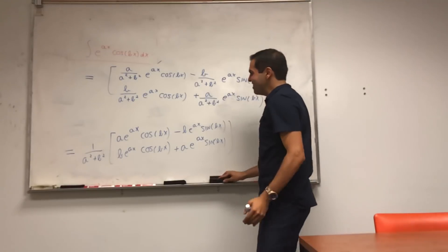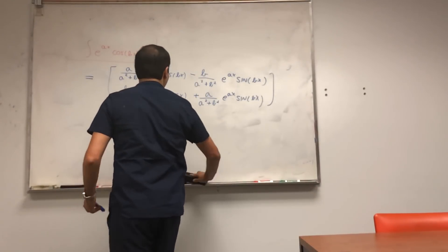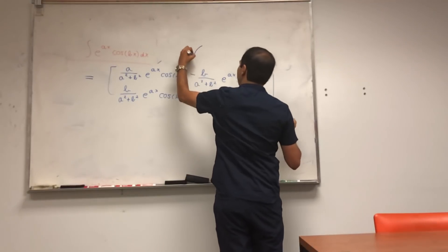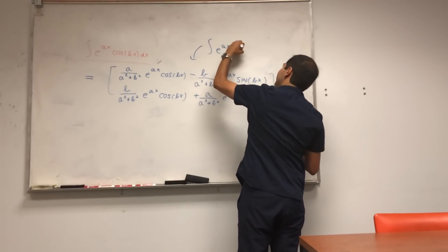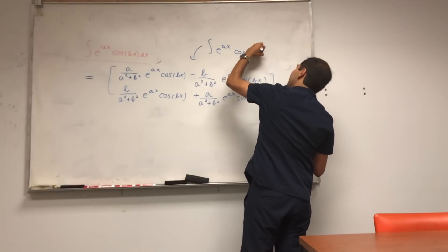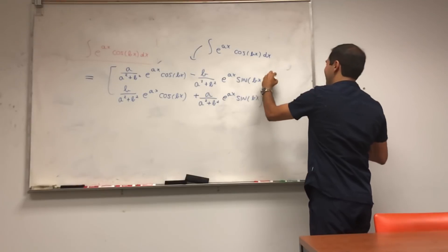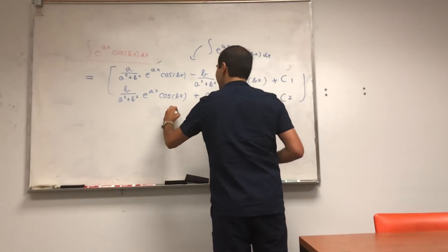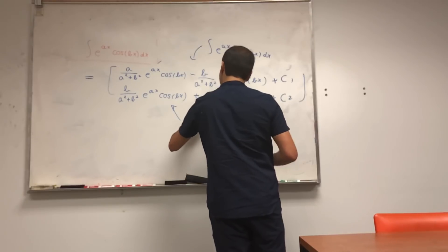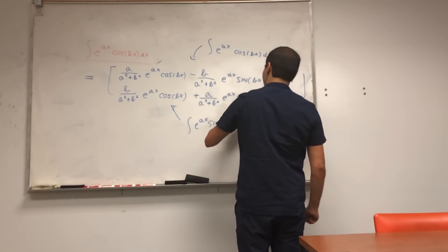And ta-da! What does that give you? It gives you the integrals. This is the integral e to the ax cosine of bx dx, I did not forget about the constants, so it's plus c1, and it gives plus c2, and this is integral of e to the ax sine of bx dx.